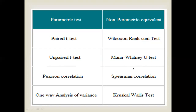Memorize it this way: unpaired → U, and Mann-Whitney U test → U. You will never forget: unpaired t-test uses Mann-Whitney U test; paired t-test uses Wilcoxon rank sum test. The third parametric test is Pearson correlation. The non-parametric equivalent of Pearson correlation is Spearman rank correlation. If we have one-way analysis of variance, then we move towards the Kruskal-Wallis test — the non-parametric equivalent of one-way ANOVA.